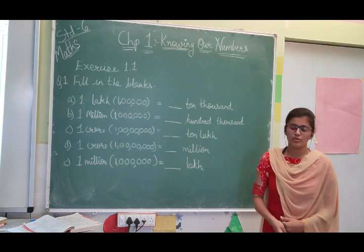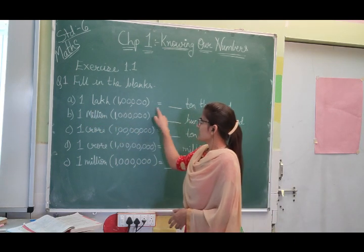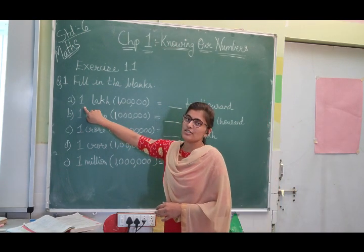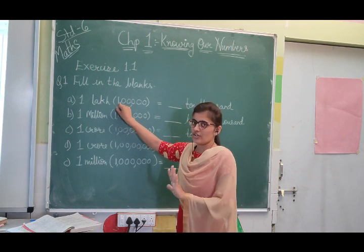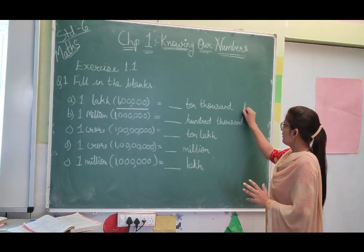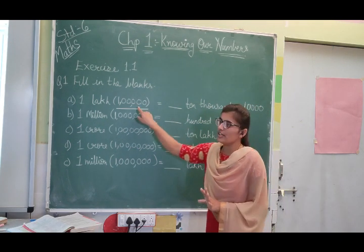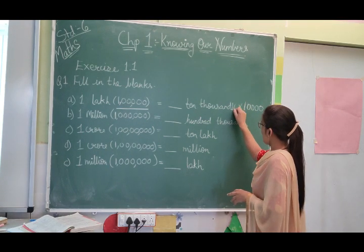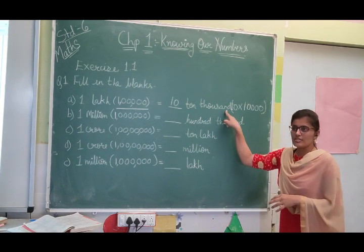Exercise 1.1, Question 1 — Fill in the blanks. First blank: how many 10,000s equal one lakh (100,000)? In 100,000 there are 5 zeros, but in 10,000 there are only 4 zeros. So we multiply by 10. Therefore 10 × 10,000 = 100,000. The required answer is 10. Next: 1,000,000 equals how many 100,000s? One million has 6 zeros and 100,000 has 5 zeros — multiply by 10, so 10 × 100,000 = 1,000,000. Answer is 10.